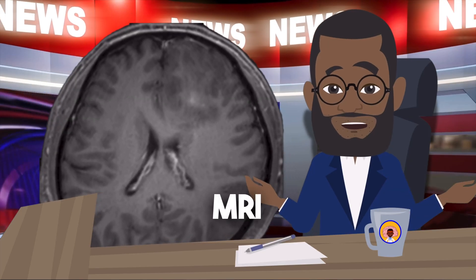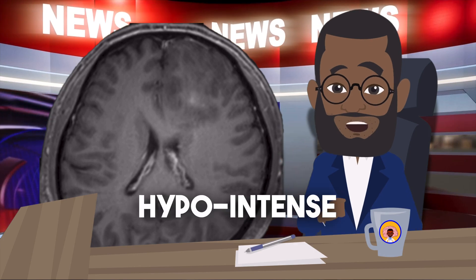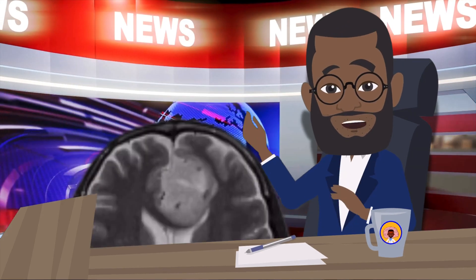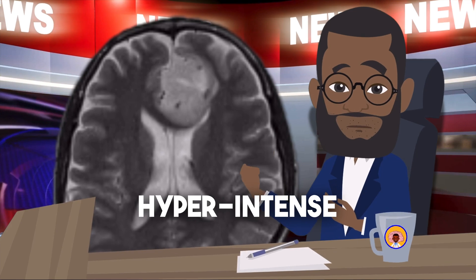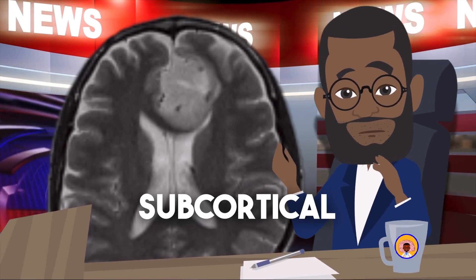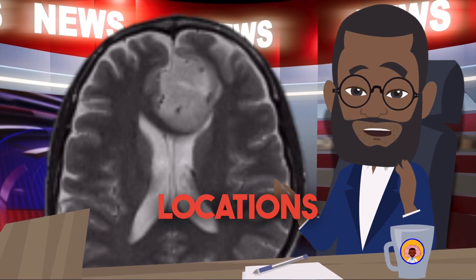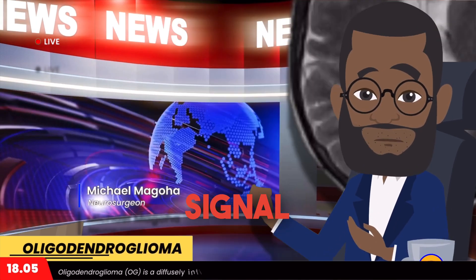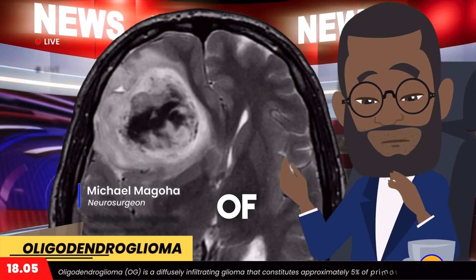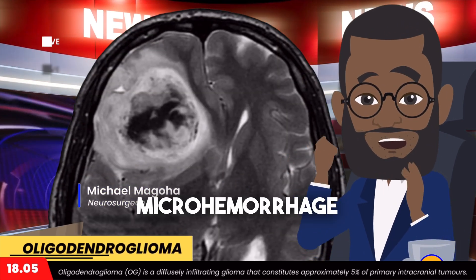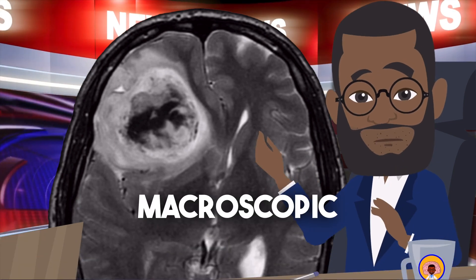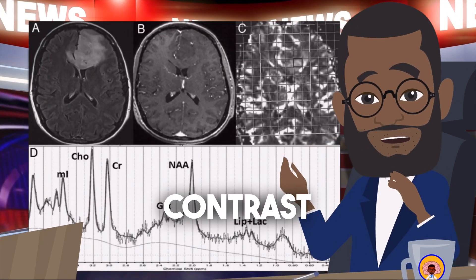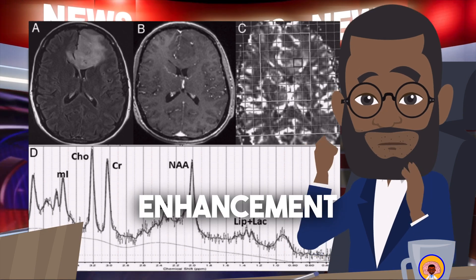On MRI, on T1 they are hypointense. On T2 they are heterogeneous or hyperintense. Cortical to subcortical locations with peritumoral hyperintense signal. There may be small areas of cystic changes, microhemorrhage, and macroscopic calcifications. Contrast will show patchy to moderate enhancement.